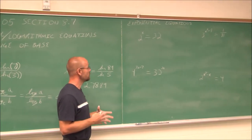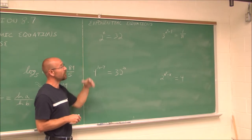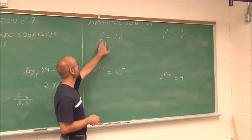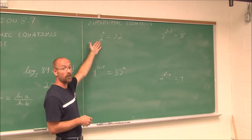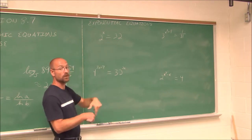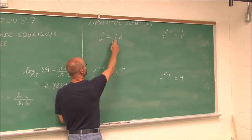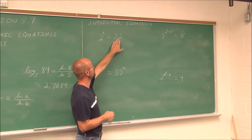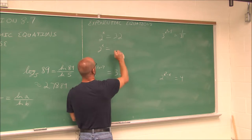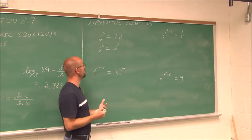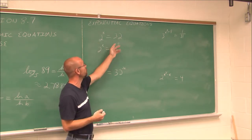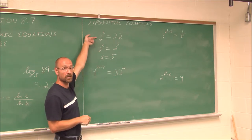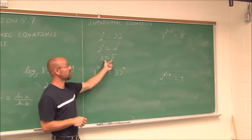Let's look at how we use these properties to solve exponential equations. The first thing to try is if they have the same base — that makes it much easier. For 2^x = 32, we ask: to what power do I raise 2 to get 32? Recognizing 32 is 2 to the 5th, I write both sides with base 2. If the bases are the same, their powers are the same: x = 5. Checking: 2 to the 5th is 32 — true.